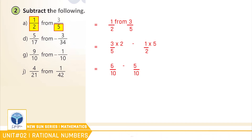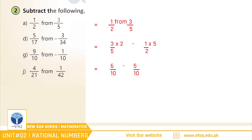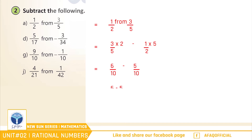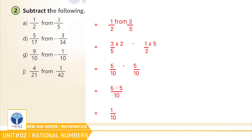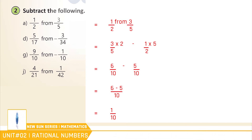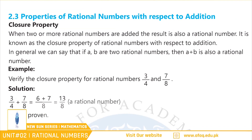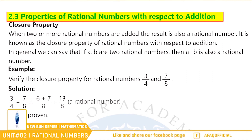اب ہمارے پاس دونوں fractions کے denominators same ہیں تو ان کا LCM بھی same ہوگا، یعنی 10۔ 10 کو ہم نے denominator کی جگہ لکھا جبکہ numerators کو اوپر لکھا، جیسا کہ (6 - 5)/10۔ اس سے ہمارے ساتھ حاصل ہوا 1/10، جو کہ ہمارا مطلوبہ جواب ہے۔ اسی طریقے کو استعمال کر کے آپ نے اس سوال کے باقی parts حل کرنے ہیں۔